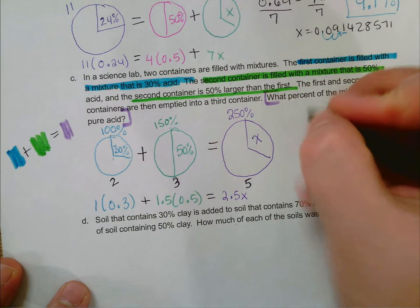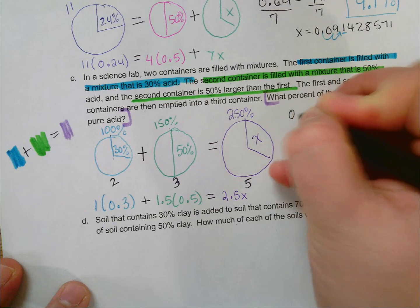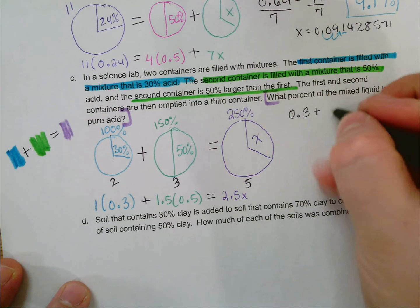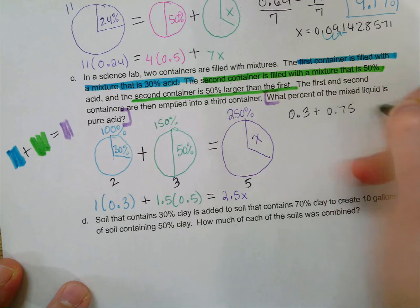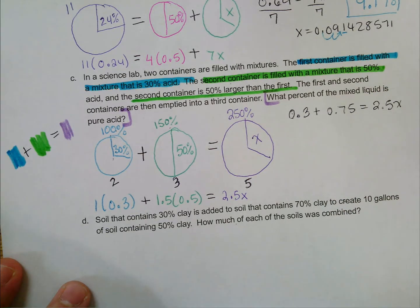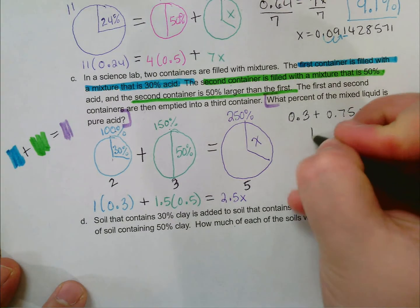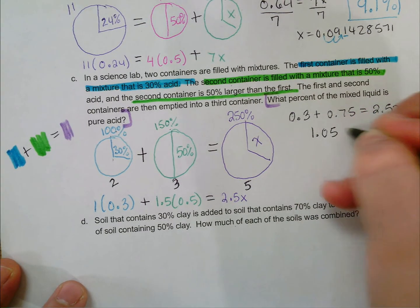1 times 0.3 is 0.3. Half of one and a half is 0.75. And that's going to be equal to 2.5x. When I combine like terms on the left-hand side, 0.3 plus 0.75 is 1.05, which is equal to 2.5x.